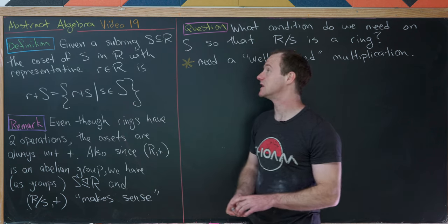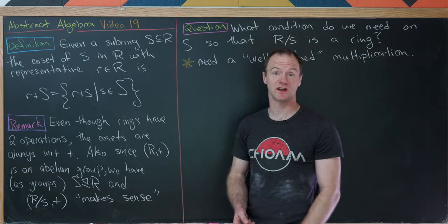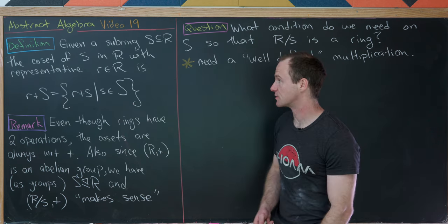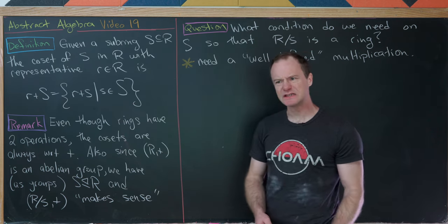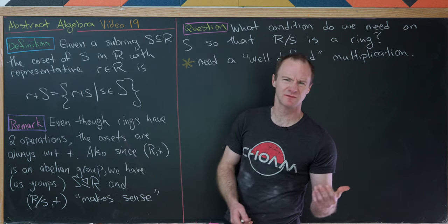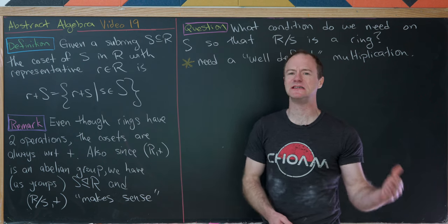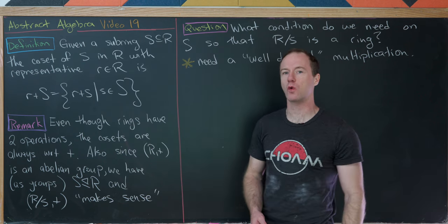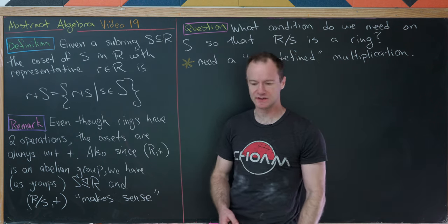This is the 19th video in our series on Abstract Algebra, and today we're going to start talking about something called ideals and quotient rings.